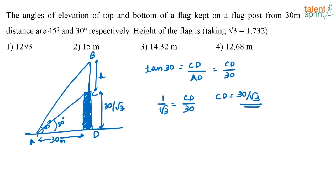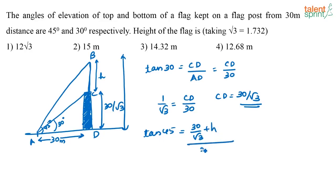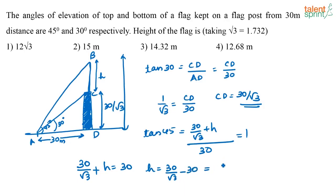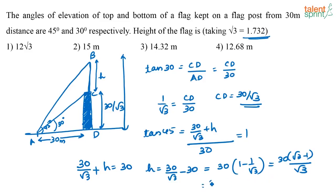There is a flag here of height H. Now consider the bigger triangle ABD. Tan 45 equals the total height — which is 30 divided by root 3 plus H — divided by 30. Since tan 45 equals 1, we get 30 divided by root 3 plus H equals 30, so H equals 30 minus 30 divided by root 3. That is 30 into 1 minus 1 by root 3, which is 30 into root 3 minus 1 by root 3. Taking root 3 as 1.732, we get 30 into 0.732 divided by 1.732, which gives approximately 12.68 meters.